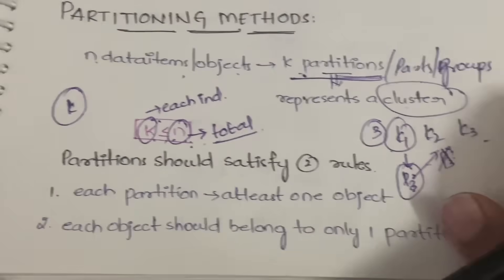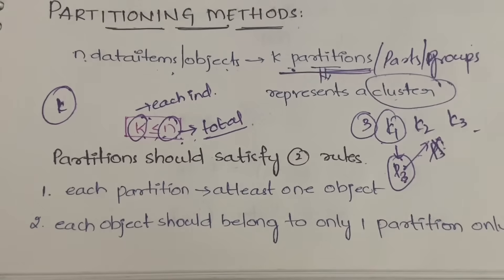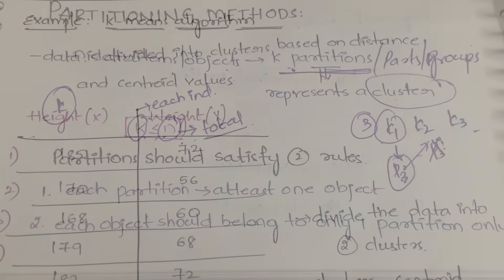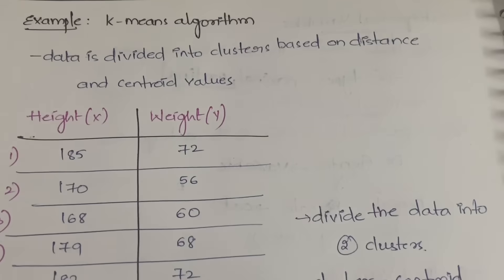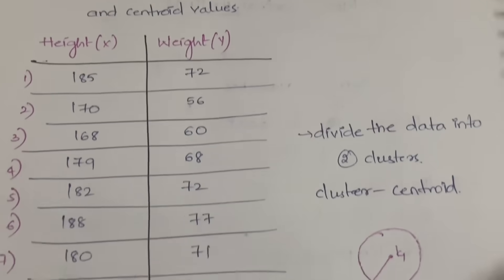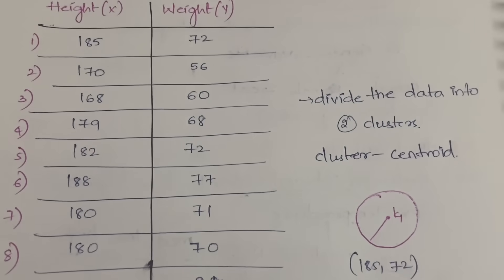An example of a partitioning method is the k-means algorithm. In k-means, you divide the data into clusters based on Euclidean distance and centroid values. Let us understand it with an example — here we have 12 values.